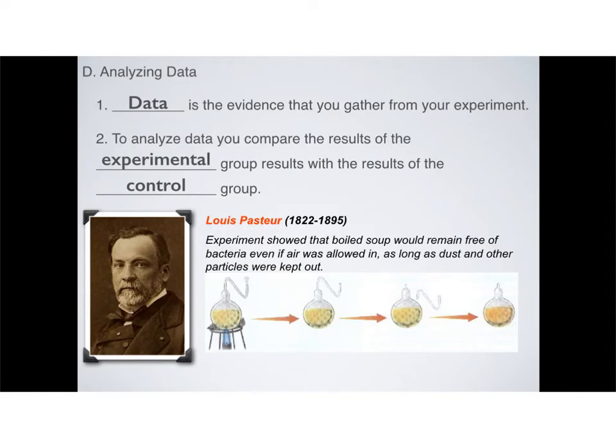Our fourth step in the scientific method is now analyzing our data. What is data? It's evidence that you gather from your experiment. That evidence that you're going to be collecting, you compare your experimental group's results to your control group's results. In the case of Francesco Redi, you were looking at the number of flies or maggots. In the case of the different plants growing underneath your lighting conditions, you'd see which ones grew the most, which ones grew the least, which ones didn't grow at all.